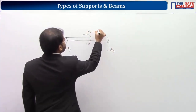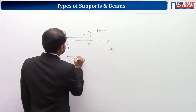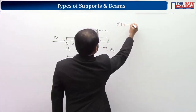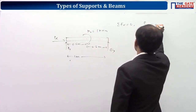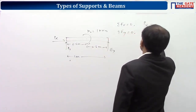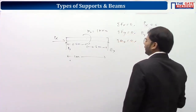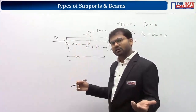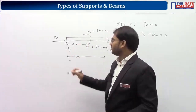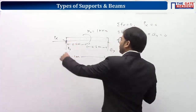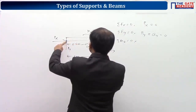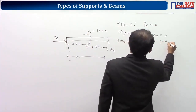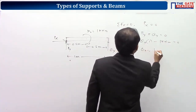Total length is 1 meter — 0.5 m on each side. Applying equilibrium: sigma Fx = 0 gives Px = 0. Sigma Fy = 0 gives Py + Qy = 0. For sigma Mz = 0, taking moment about point P: Qy × 1 (anticlockwise) minus 1 kN·m (clockwise) = 0, giving Qy = 1 kN. Substituting back gives Py = −1 kN.